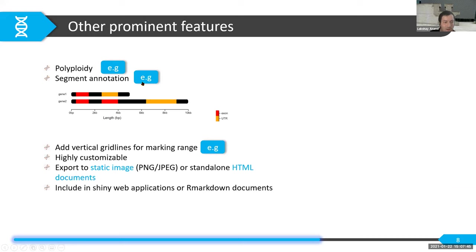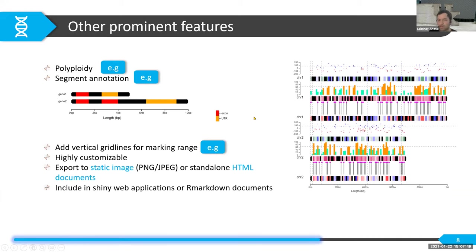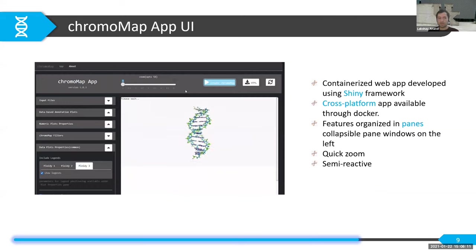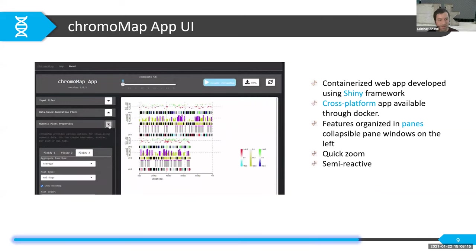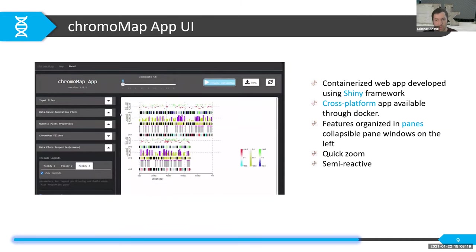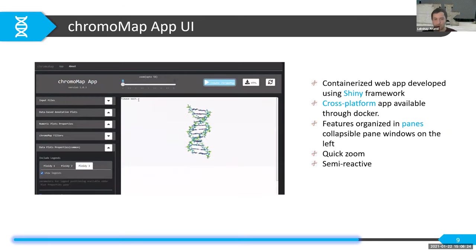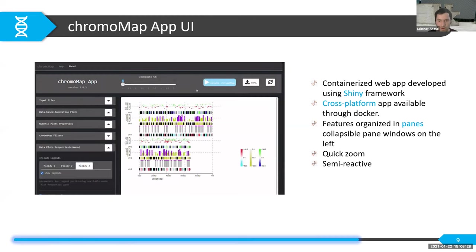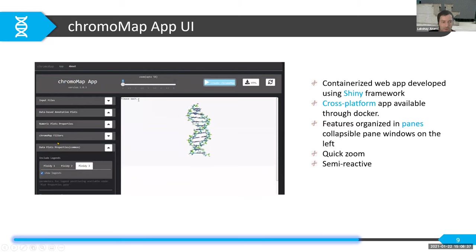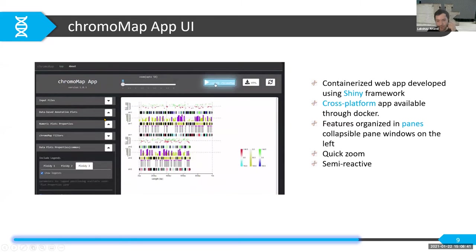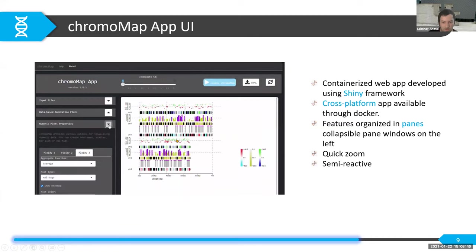ChromaMap is highly customizable and plots can be exported as static images or HTML documents. You can include them in Shiny web applications or RMarkdown documents. The ChromaMap app is a containerized web application available as a Docker image — it runs on your web browser with no dependencies; just a few steps to install and it runs on your computer. It has a user-friendly interface with panes, zoom, and semi-reactor features.